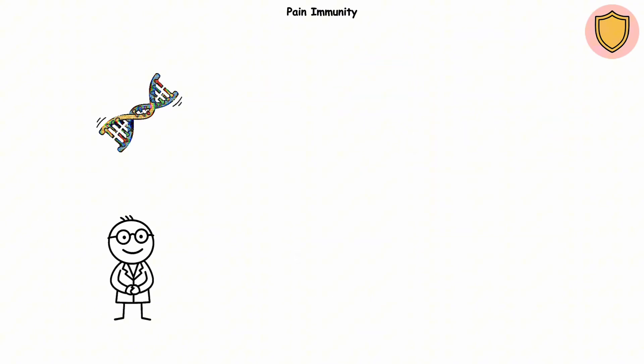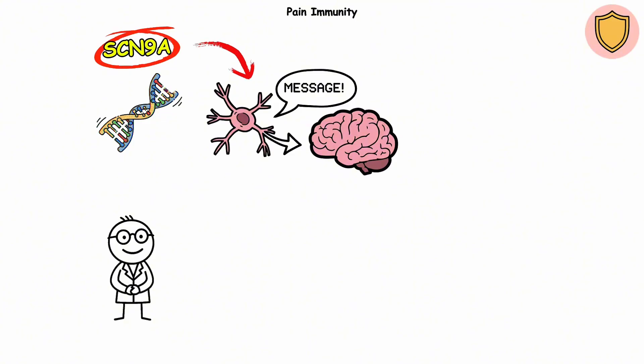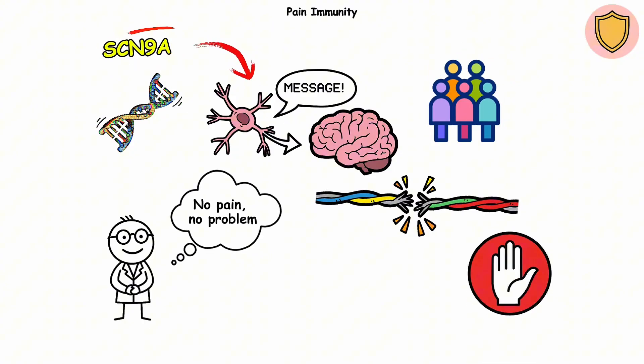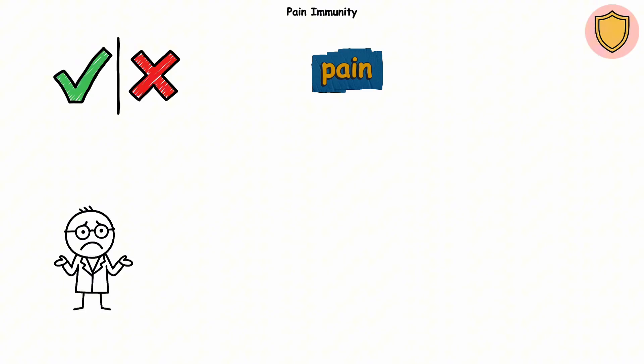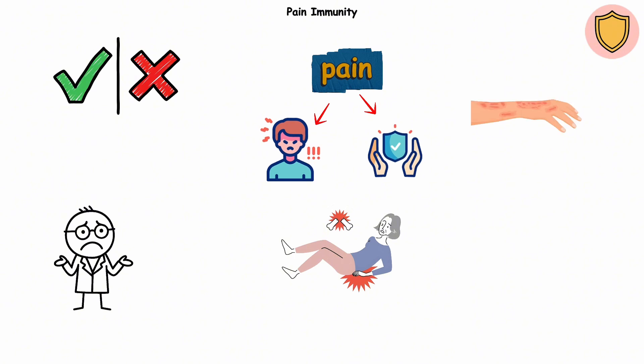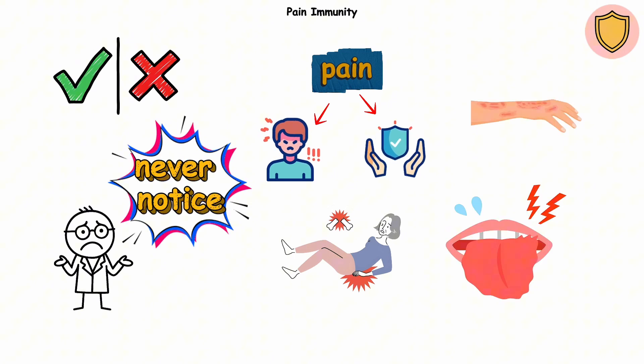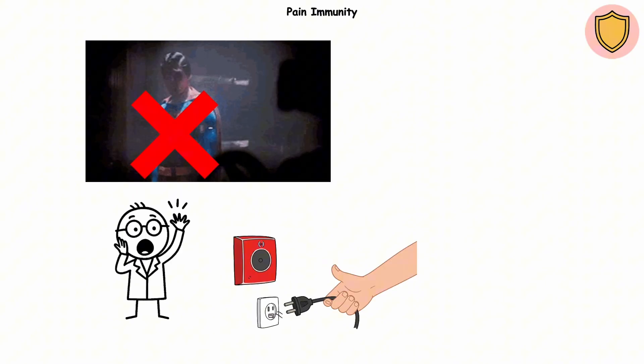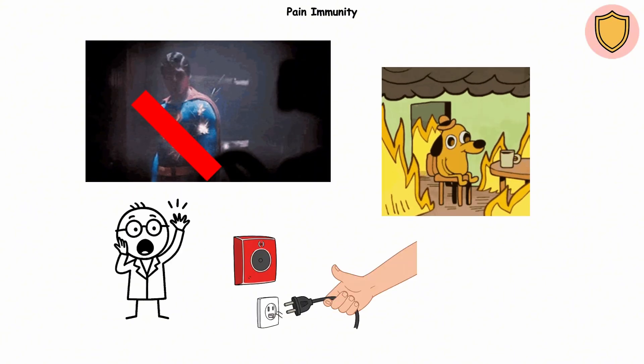This is all thanks to a small glitch in the SCN9A gene. Normally, this gene helps nerve cells send those pain signals to the brain. But in people with CIP, that wire's cut. The signal never makes it through. No pain, no problem, right? Not exactly. Pain isn't just an inconvenience. It's a built-in safety feature. Without it, people can break bones, burn skin, or bite through their tongue and never notice. It's not a life of invincibility. It's more like unplugging the fire alarm at home. You won't know something's wrong until it's way too late.